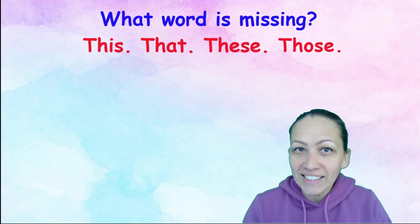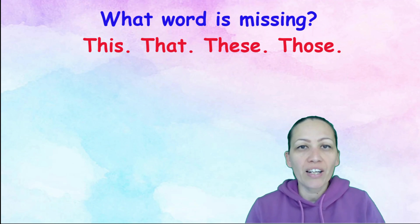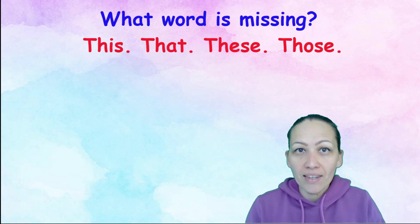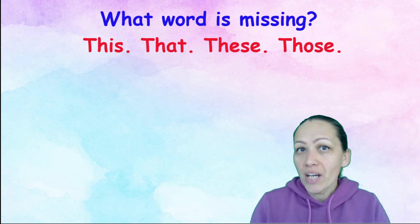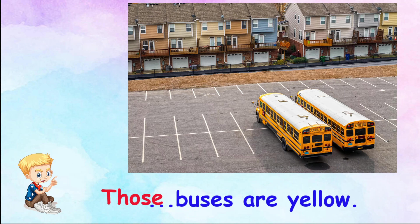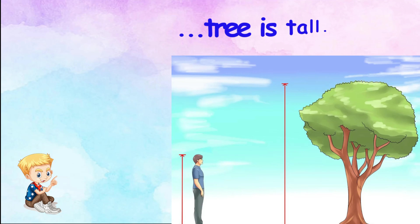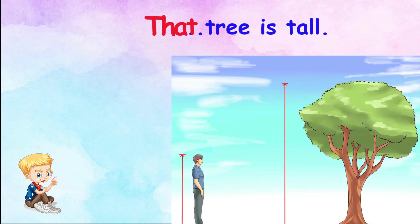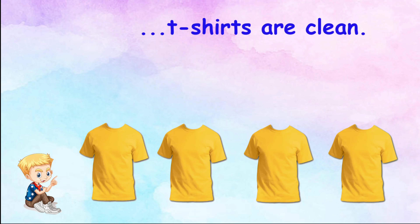Now let's have some practice. I will give you a sentence and you should find out which word is missing: this, that, these or those. Let's start. Buses are yellow — Those buses are yellow, because those buses are far away from us. Tree is tall — That tree is tall, because the tree is far away from us. T-shirts are clean — These t-shirts are clean, because the t-shirts are next to us.